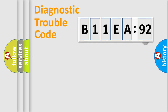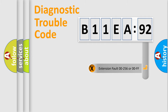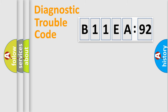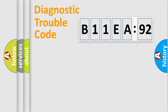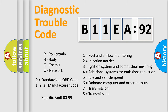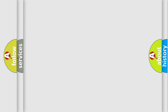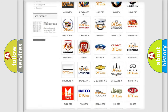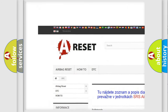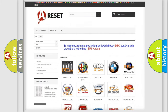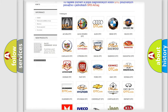Our website airbagreset.sk produces useful videos for you. You do not have to go through the OBD2 protocol anymore to know how to troubleshoot any car breakdown. You will find all the diagnostic codes that can be diagnosed in Chrysler vehicles, along with many other useful things.